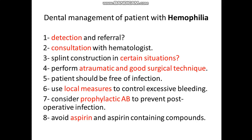Sometimes we may need stimulants of factor 8 such as desmopressin, or we may give the patient antifibrinolytic agents such as tranexamic acid or aminocaproic acid to stabilize or prevent lysis of the blood clot. We may also give steroids to inhibit immune inhibitors — which are immunoglobulin G antibodies — that prevent the function of the replaced factor 8, thereby facilitating its function.